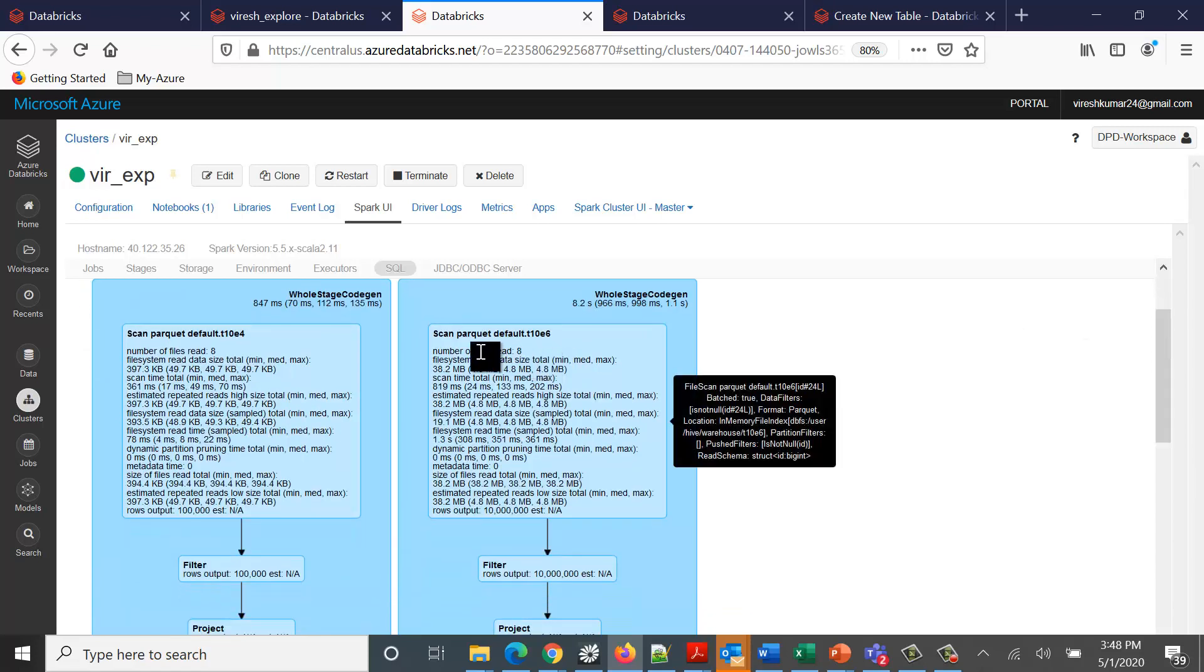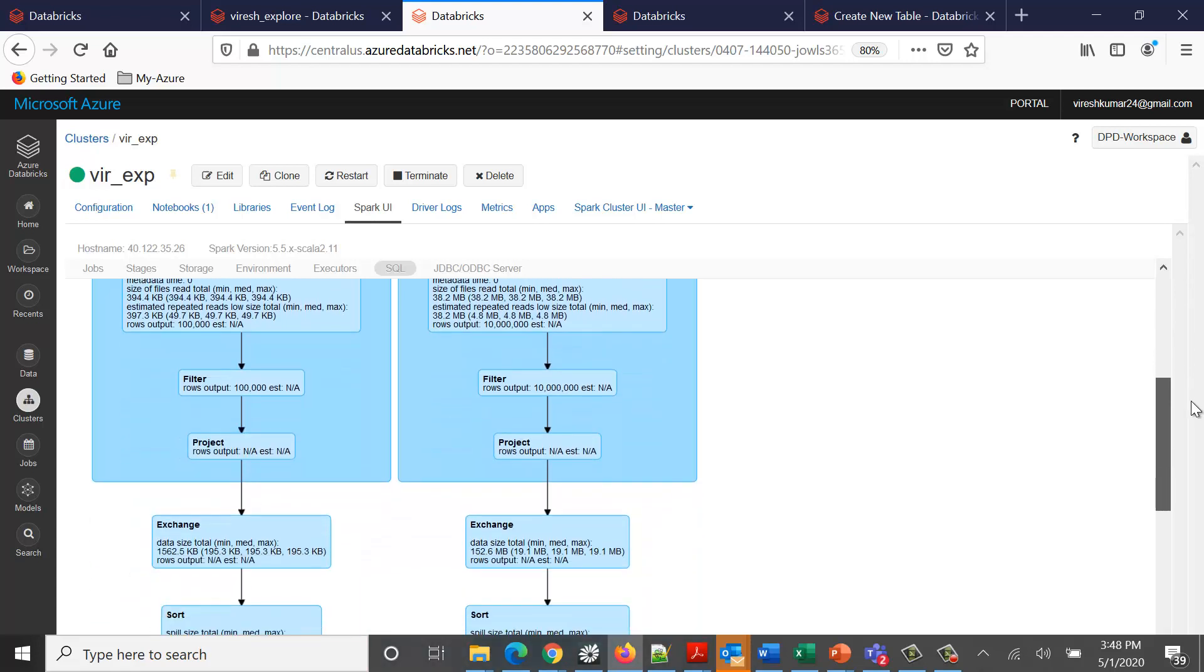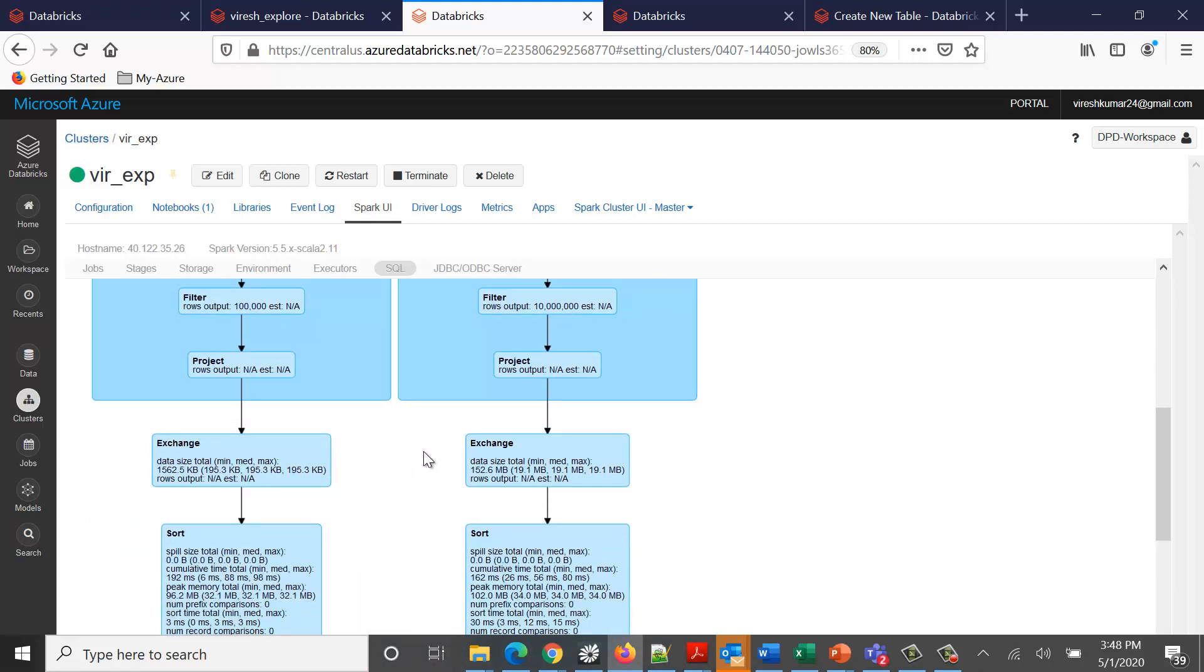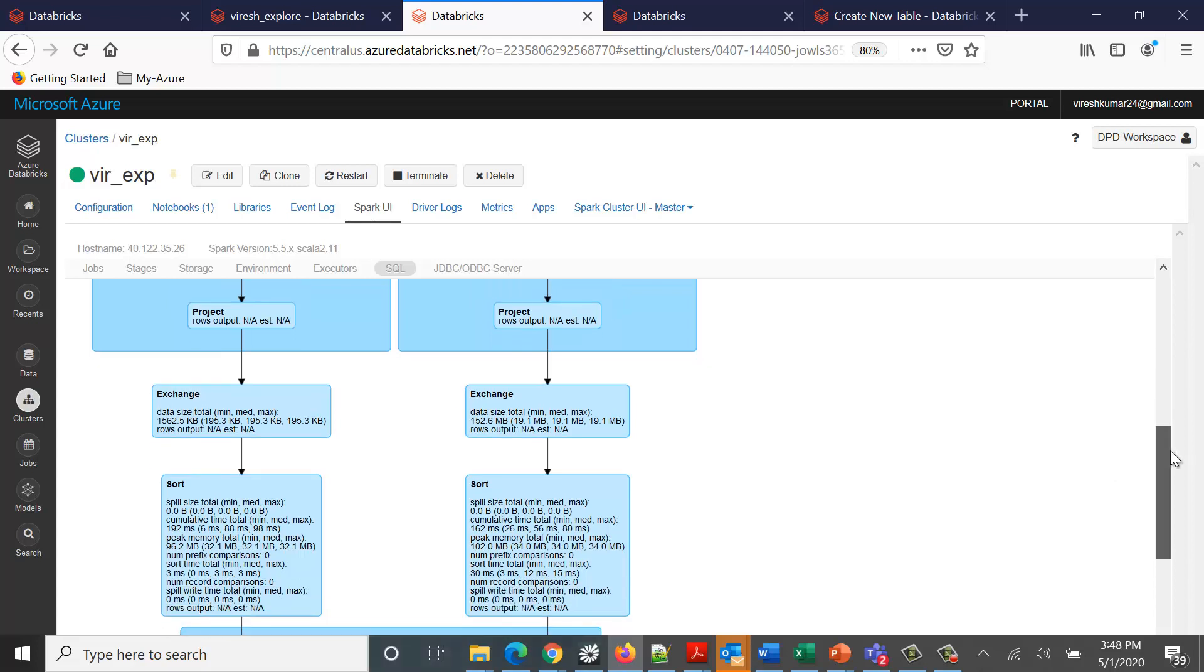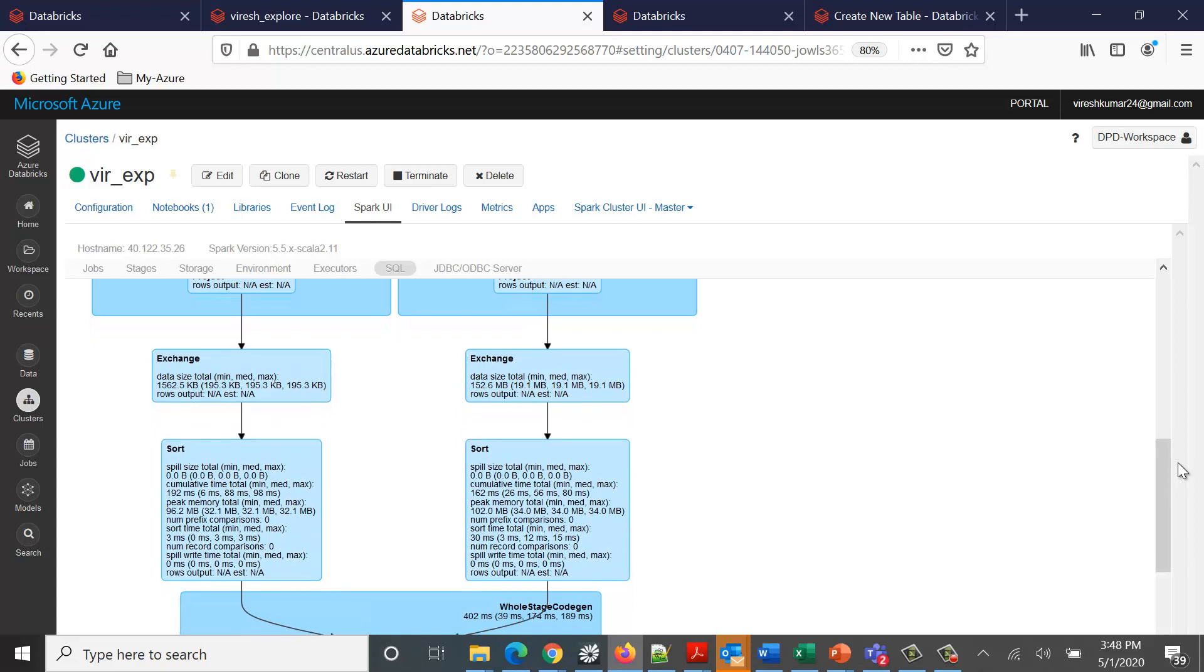I have two tables which are read. If you see the number of files read, eight files are read for each of those two tables. Then exchange stages have come in between. Exchange means data shuffling, so data would now be shuffled for this join to materialize because it's not a broadcast join.